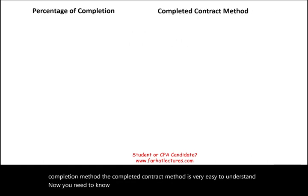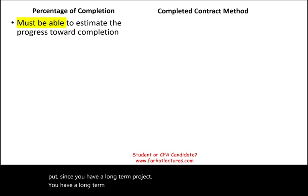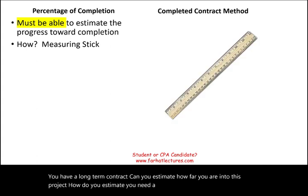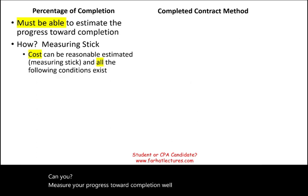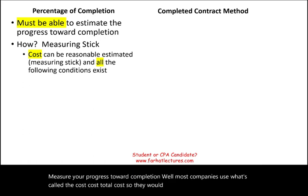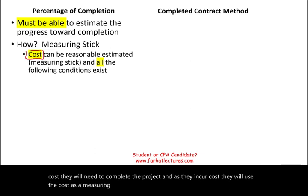There are specific rules for when to use the percentage of completion method. First, you must be able to estimate the progress toward completion. Since you have a long-term project, can you estimate how far you are into it? Most companies use cost-to-total-cost as a measuring stick — estimating the total cost of the project and using costs incurred to date as the measure of progress. You must be able to reasonably estimate the total cost.